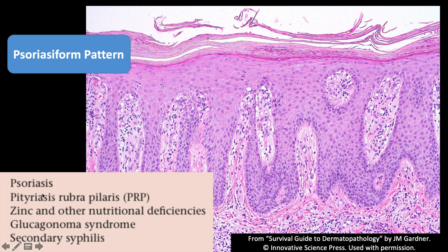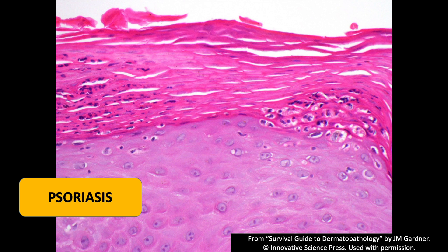Psoriasis is psoriasiform, but there are a variety of other more esoteric things that can be psoriasiform. Syphilis is one that's important to know about, because there is an increasing incidence of syphilis in recent years. So if you see long rete ridges like this with a band of lymphocytes and plasma cells underneath, do a spirochete immunostain to make sure it's not secondary syphilis.